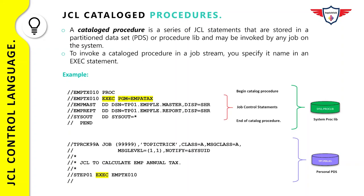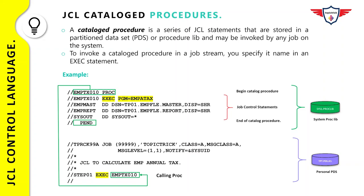The following example has two sections: the top section is a catalog procedure and the bottom section is a sample JCL that invokes the catalog procedure stored as a PDS member. The catalog procedure starts with PROC and ends with a PEND statement; all statements between PROC and PEND are treated as PROC statements and are only executed when the PROC is invoked by a JCL. The sample JCL has a job card to specify shop information, a comment section describing what the job does, and an EXECUTE statement invoking the PROC stored in the system library SYS1.PROCLIB.